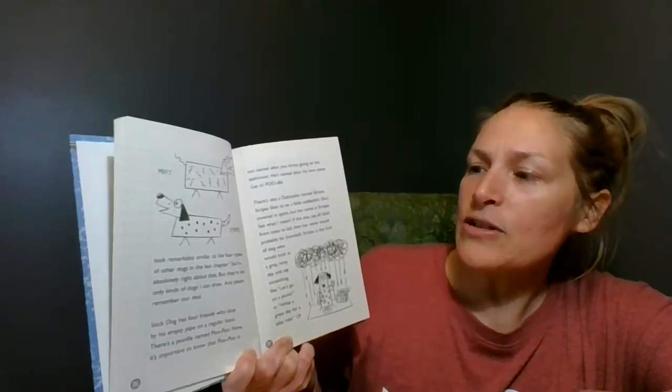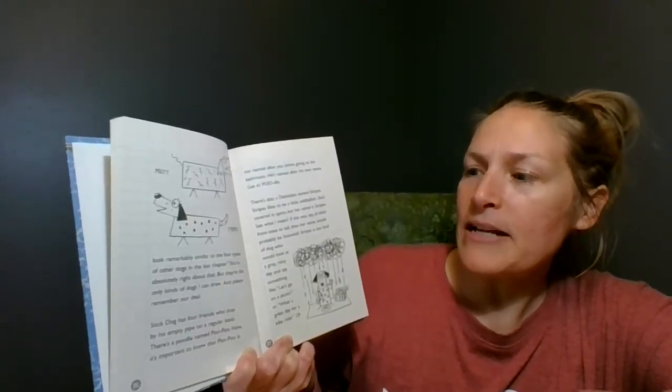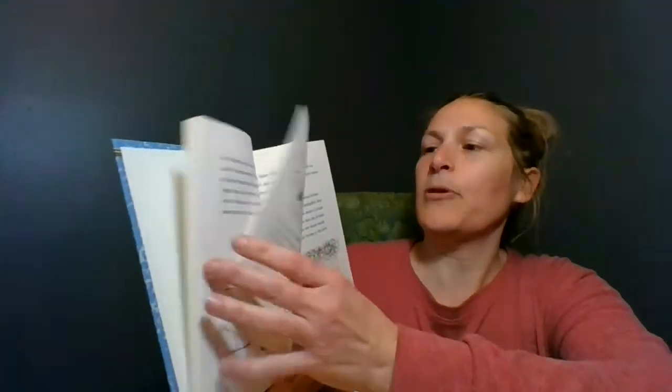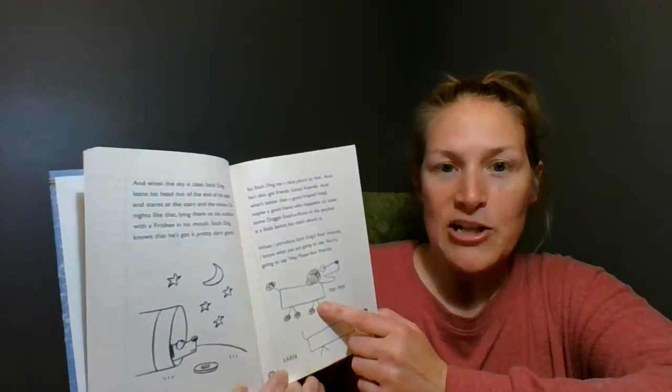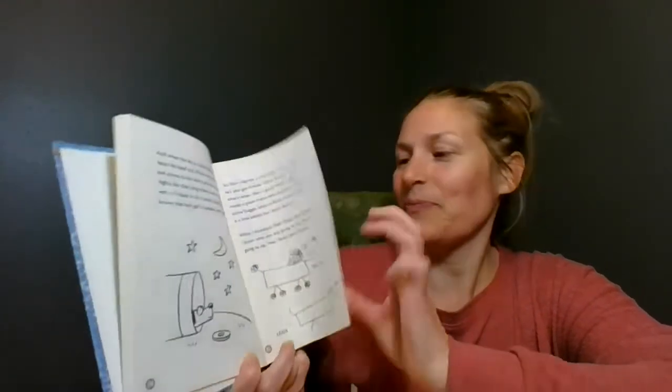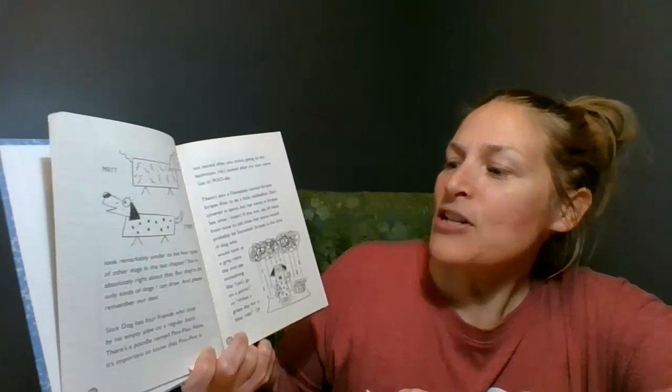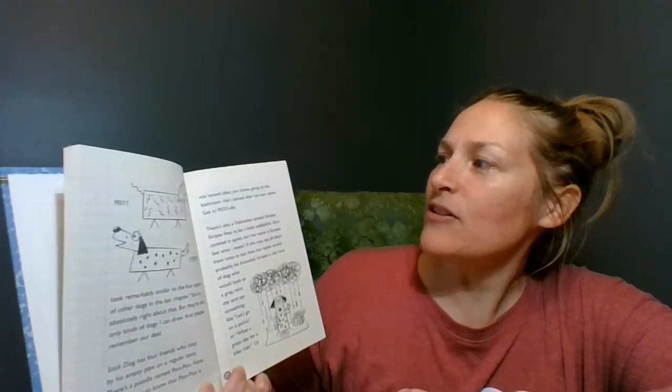When I introduce Stick Dog's four friends, I know what you're going to say. You're going to say they look remarkably similar to the four types of other dogs in the last chapter. You're absolutely right about that, but they're the only kinds of dogs I can draw. And please remember our deal, you can't worry about his drawings. That was part of the deal. Stick Dog has four friends who stop by his empty pipe on a regular basis. There's a poodle named Poo Poo.